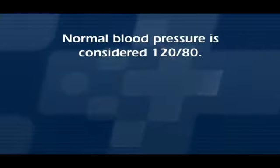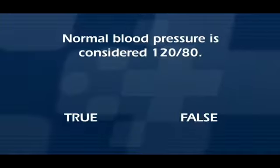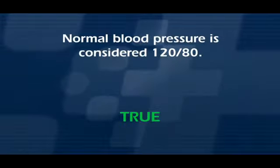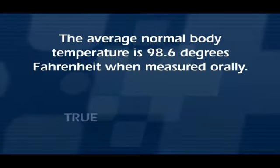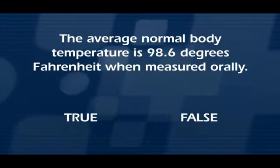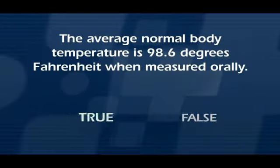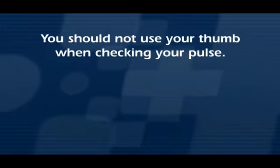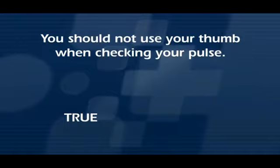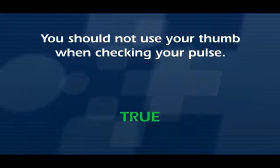What we have learned. Normal blood pressure is considered 120 over 80. True or False? The answer is True. The average normal body temperature is 98.6 degrees Fahrenheit when measured orally. True or False? The answer is True. You should not use your thumb when checking your pulse. True or False? The answer is True.